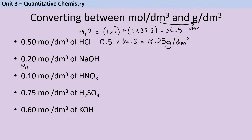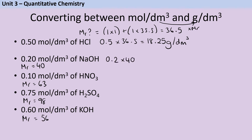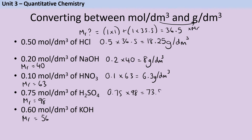The relative formula masses are: NaOH = 40, HNO₃ = 63, H₂SO₄ = 98, and KOH = 56. Multiplying each concentration by its Mr: 0.2 × 40 = 8 g/dm³; 0.1 × 63 = 6.3 g/dm³; 0.75 × 98 = 73.5 g/dm³; and 0.6 × 56 = 33.6 g/dm³.